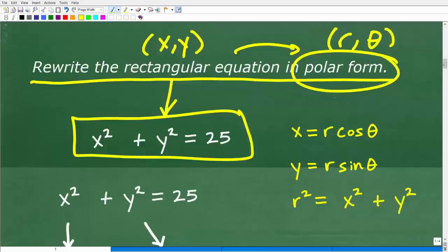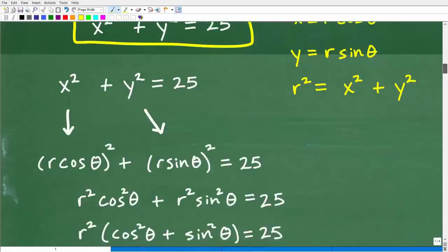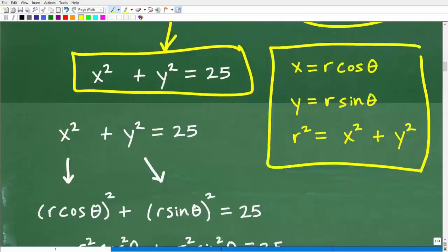All right. So how do we do this? Well, we need to keep in mind these equivalencies right here, these formulas. So you never want to forget these. This is x is equal to r cosine theta.